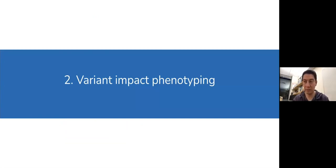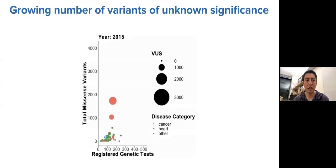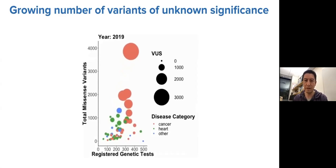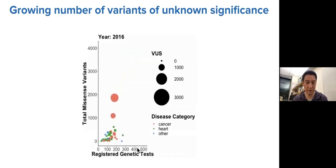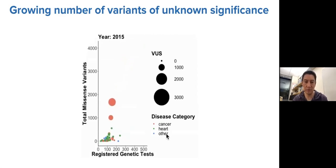Now I'll shift to another application using images — not for drug discovery but to understand mutations in cancer. The number of genetic tests clinicians and researchers perform every year is growing to identify genes that may be mutated and associated with diseases such as cancer and heart disease. Most of those mutations are of unknown significance — we don't know if the reported mutation is causing the disease or is just a side effect.